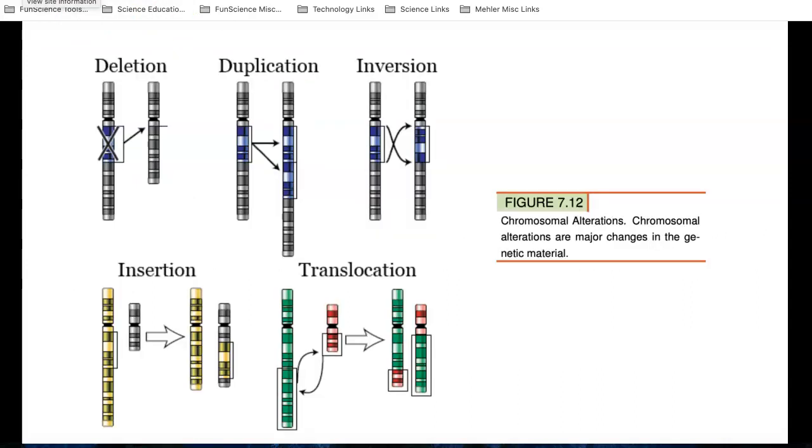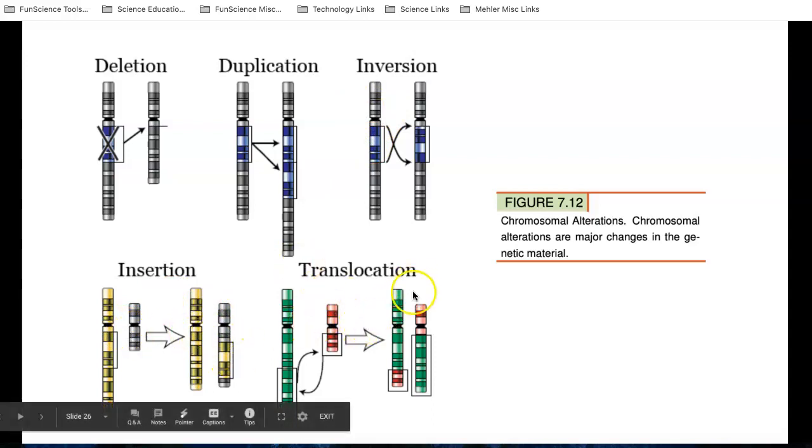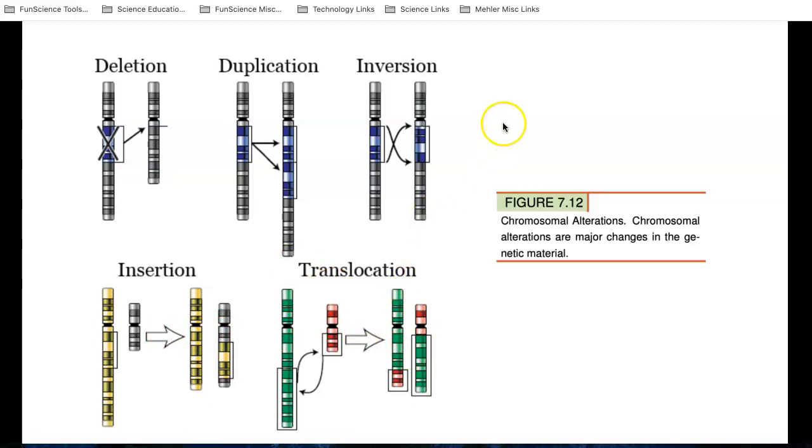There are many ways that mutations can occur. For example, in this first one, this is a picture of a chromosome. A whole section of chromosome might be deleted by accident, or it might be duplicated by accident, or a section of one chromosome might be inverted, turned upside down, which can cause a problem. Then there's insertion, which a section of chromosome can be inserted, or deleted, or changed position. So these are chromosomal level, but there's also gene level, which causes a change in the code, the A, C, T, or G.